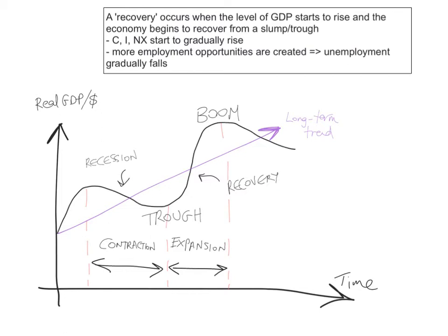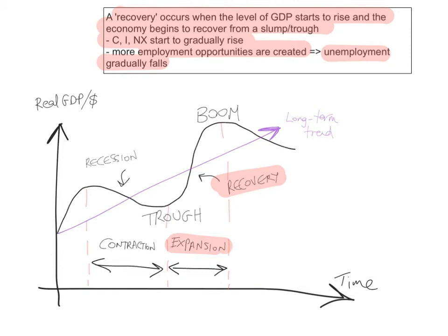At some point, economies eventually recover. A recovery occurs when the level of GDP starts to rise and the economy begins to recover from a slump or trough. Consumption spending, investment spending, and net exports start gradually to rise. More employment opportunities are created, so unemployment gradually falls. As you can see on the graph, after the trough there is a slow recovery with an increase in real GDP over time. This is a period of expansion in economic activity.